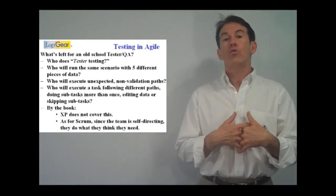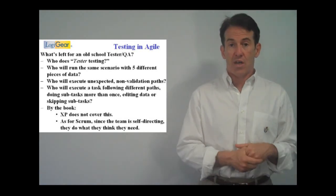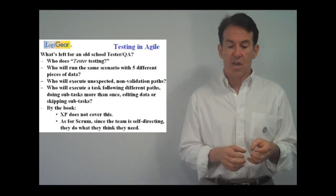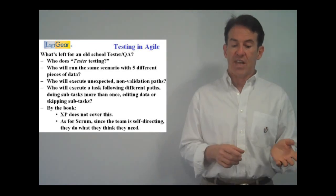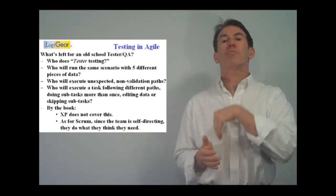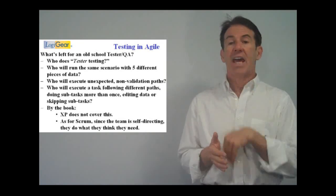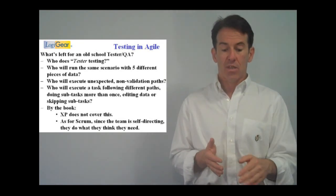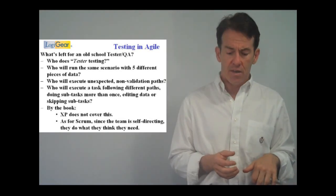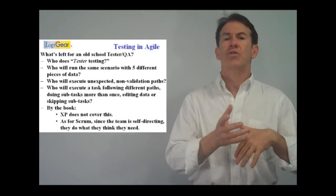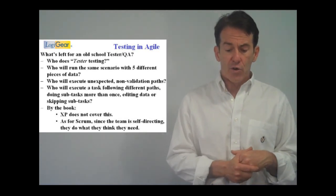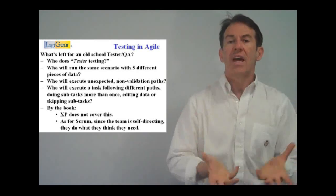What's left for the old school tester, the old school QA, the person who in the last millennium was called a QA? What's left for these kind of people? Who's going to do tester testing? Who's going to run the same scenario with five different pieces of data? Who's going to execute the unexpected paths, the alternative paths, going back to earlier places in the path, in the workflow and changing data, editing data, calling different records in the same workflow, doing sub-tests, going back and changing dates and doing all those kind of crazy things that the testers do that are really essential to releasing high quality software.